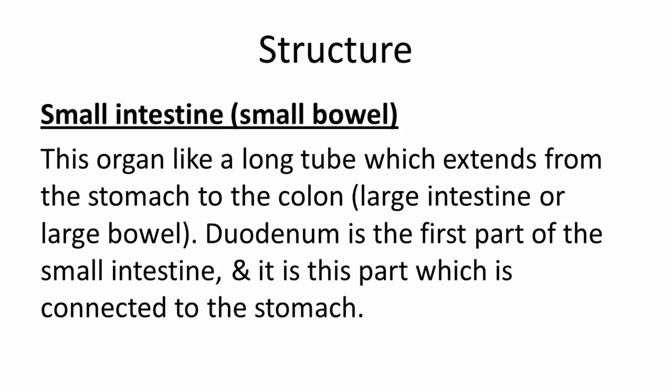The small intestine is an organ like a long tube which extends from the stomach to the colon, also known as the large intestine or large bowel. The duodenum is the first part of the small intestine, and it is this part which is connected to the stomach.